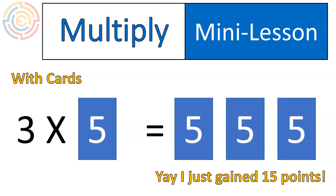Multiplication is repeat adding. So 3 times 5 is the same as 5 plus 5 plus 5, and we can see that in this example.